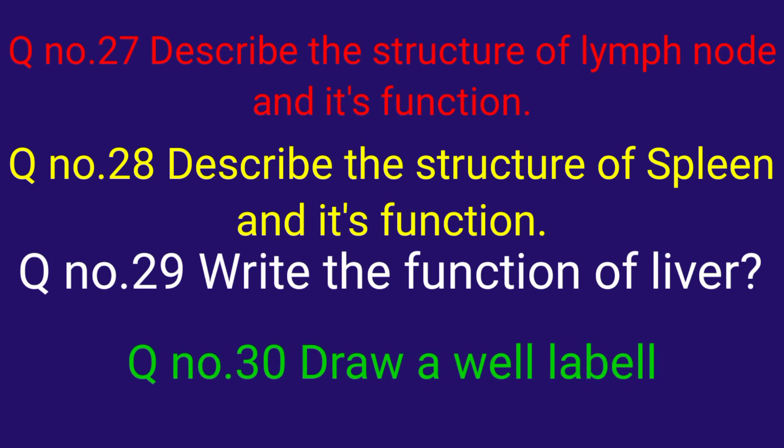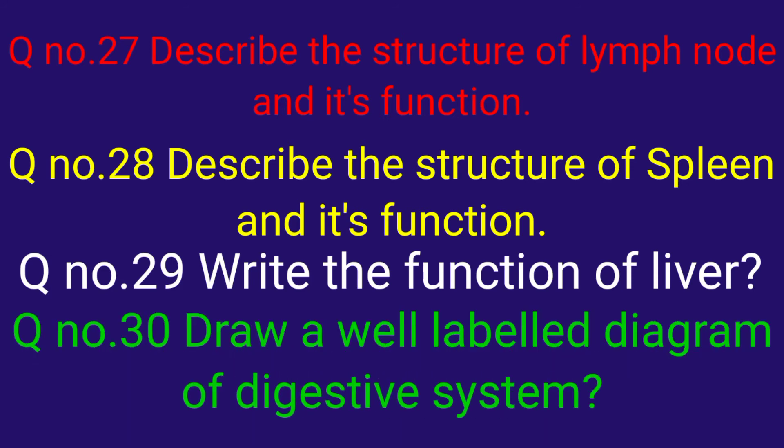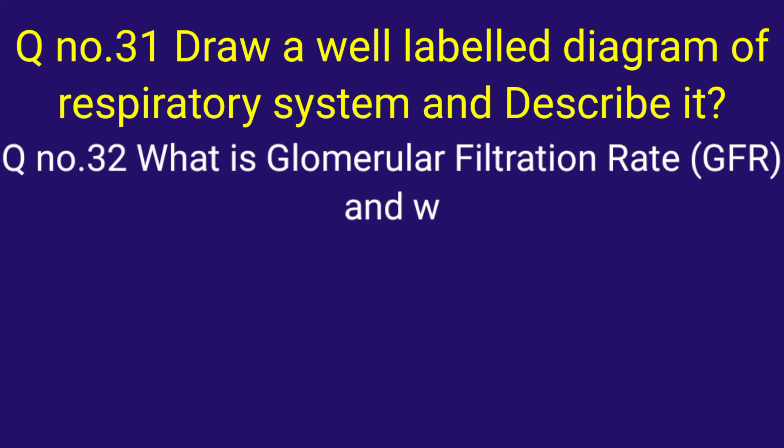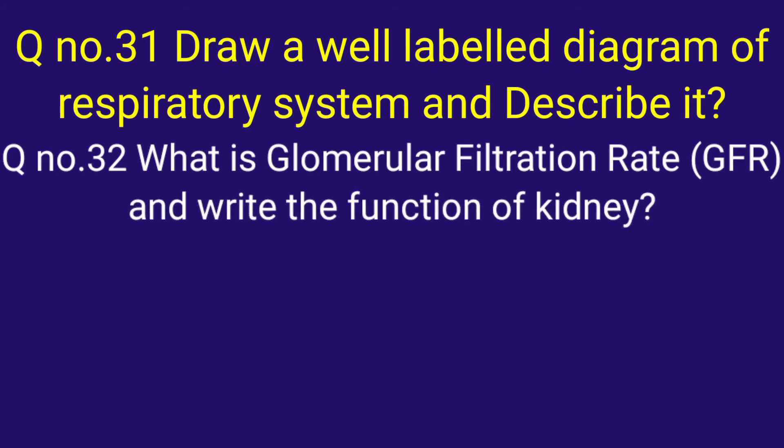Question number thirty: draw a well-labeled diagram of the digestive system. Question number thirty-one: draw a well-labeled diagram of the respiratory system and describe it. Question number thirty-two: what is glomerular filtration rate (GFR) and write the function of the kidney.